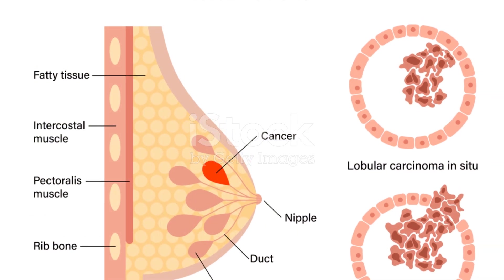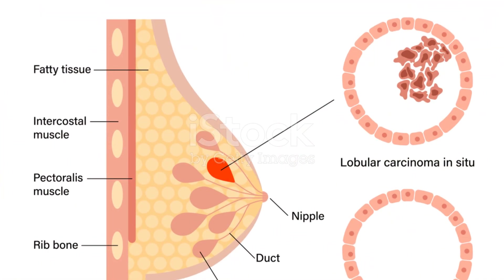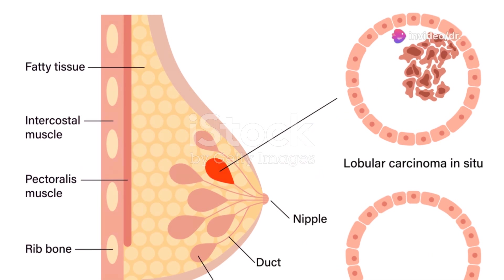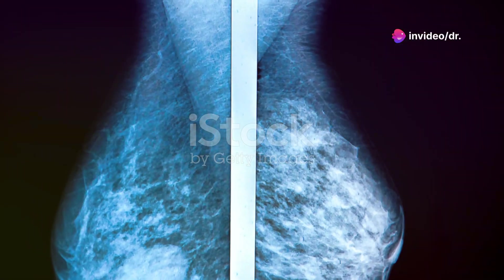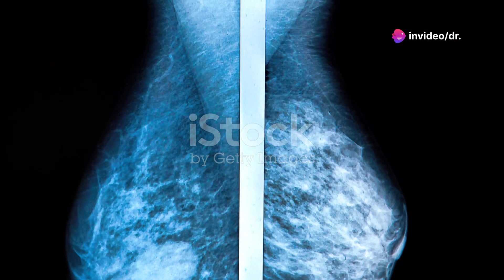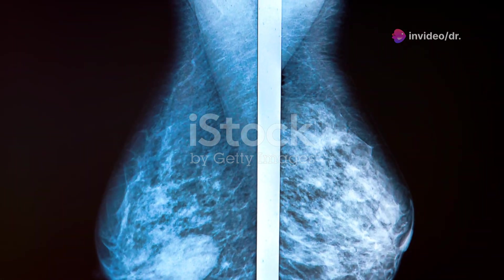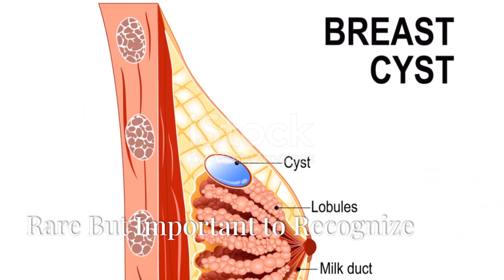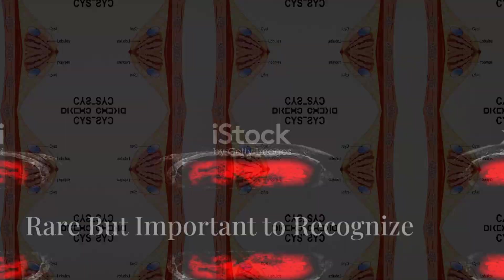Invasive lobular carcinoma, or ILC, starts in the lobules, which are the milk-producing glands of the breast. This type of cancer can be trickier to detect on a mammogram because it doesn't always form a lump.